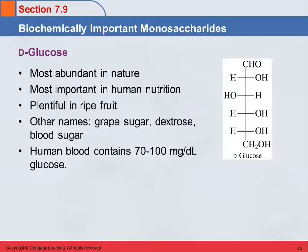Your blood contains between 70 and 100 milligrams per deciliter of glucose — that is the sugar circulating in your blood.